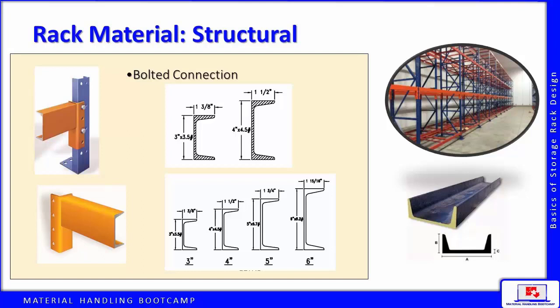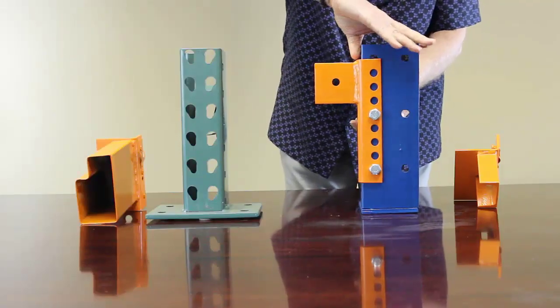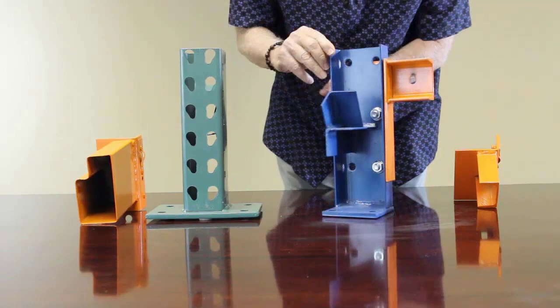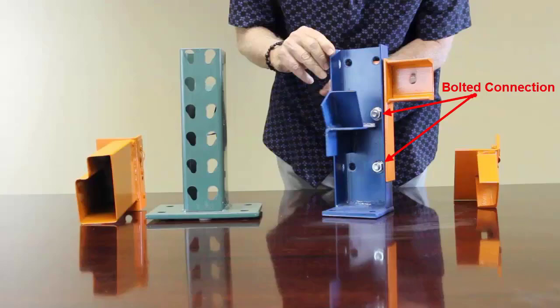Structural rack systems are very similar to roll form pallet rack systems, except that the horizontal load beams are attached to the uprights with bolts versus a clip connection as you shall see in roll form rack.